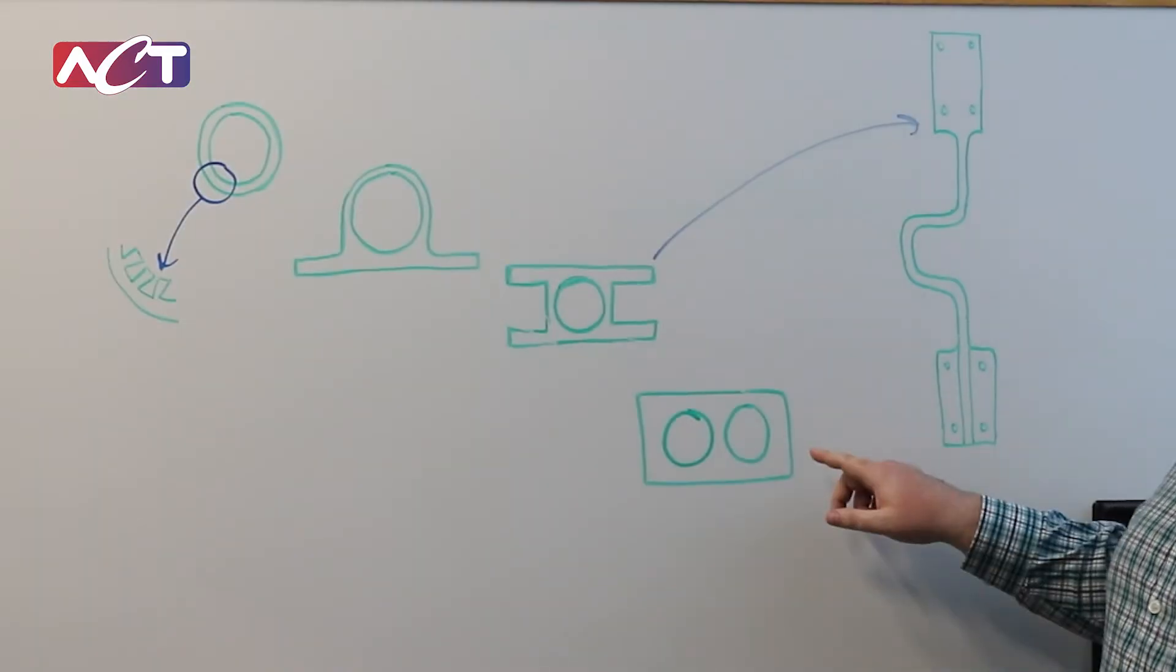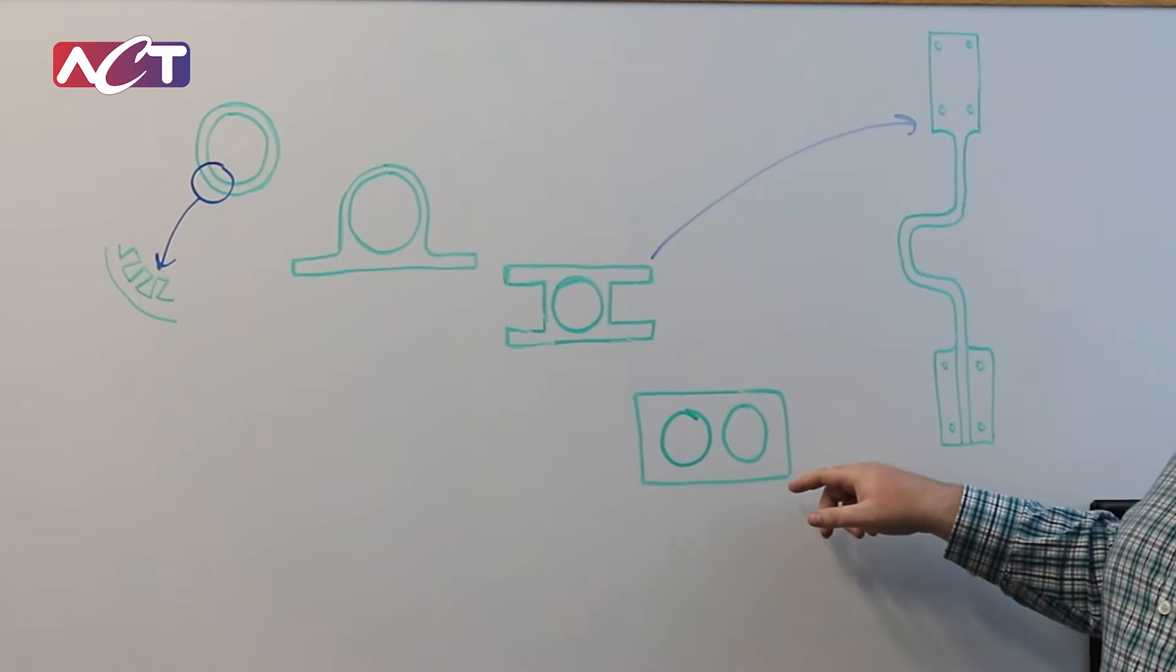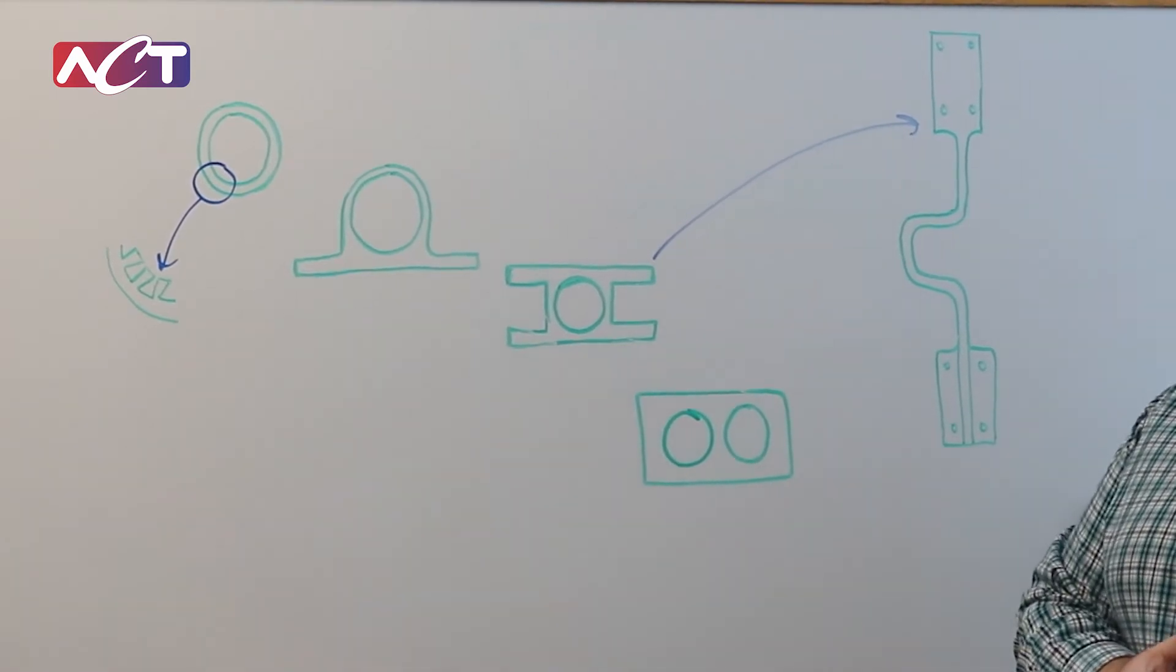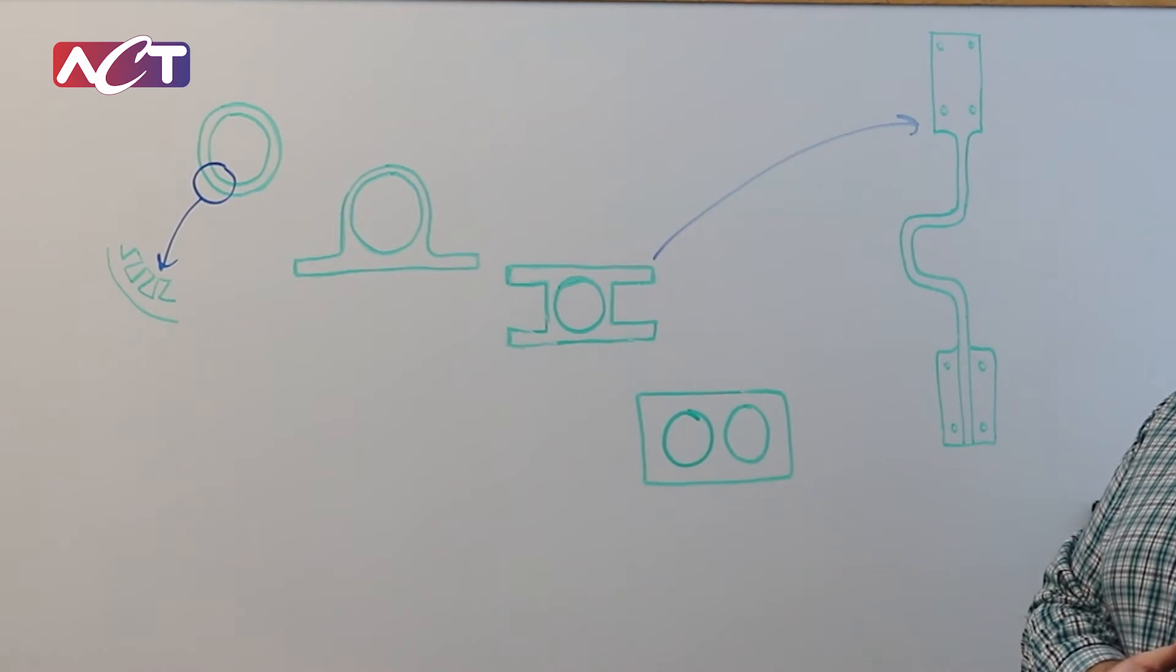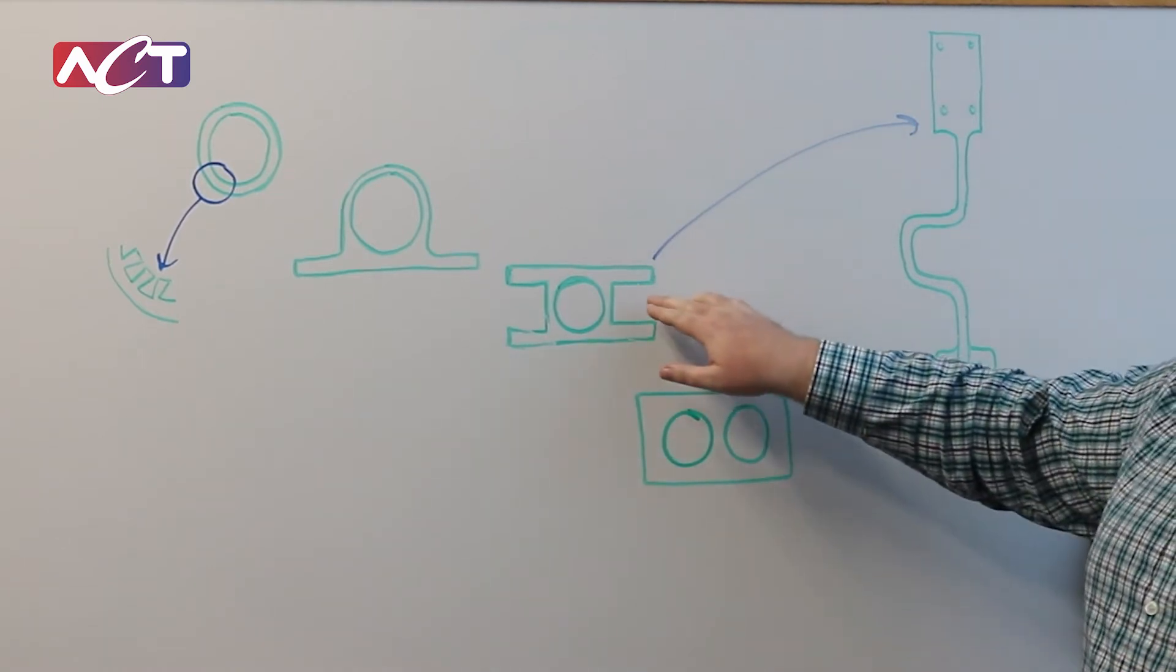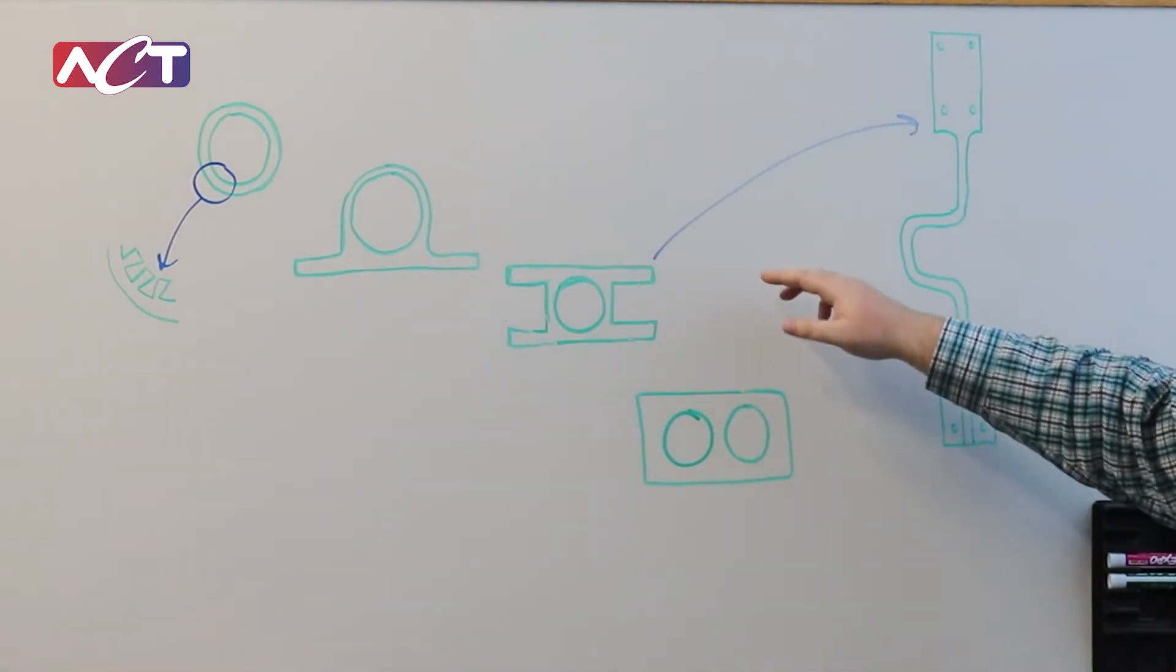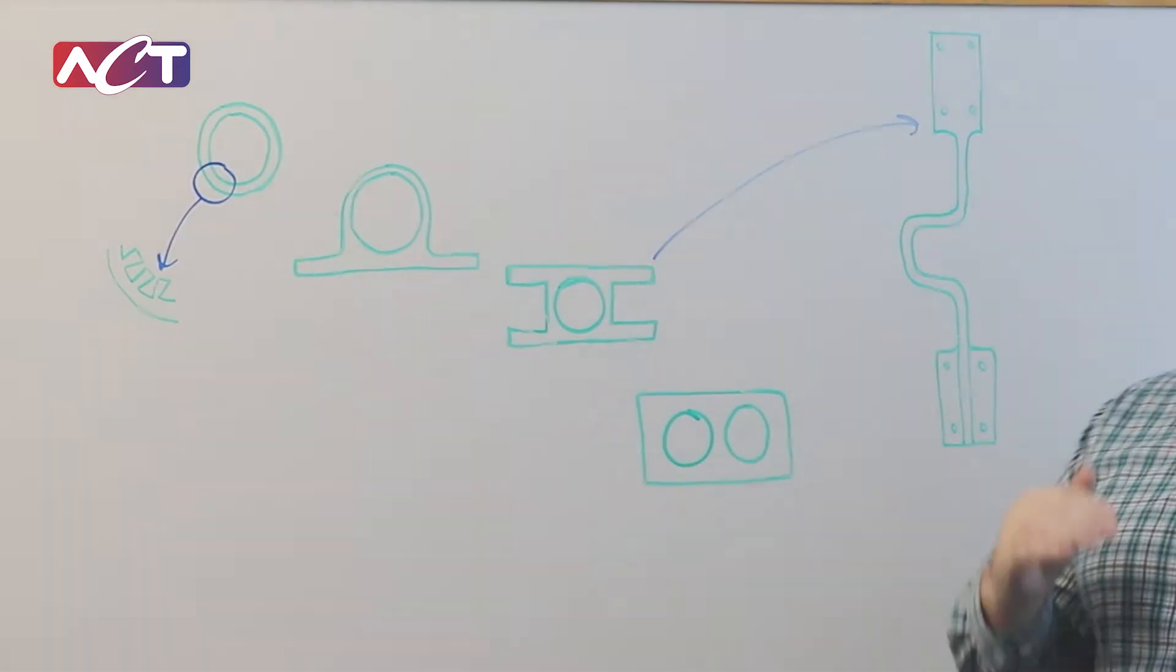So you might use the dual bore extrusion if you want redundancy or if you need extra load carrying capacity along the length. And then you might use dual flanges if you need the condenser and evaporator to be on opposite sides.